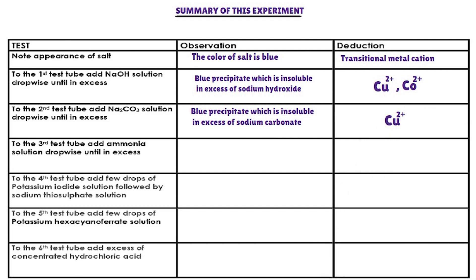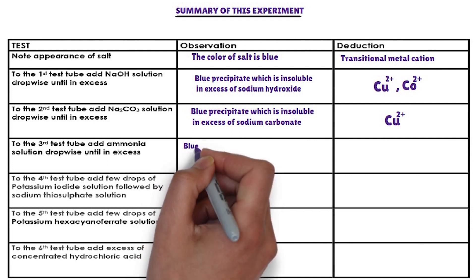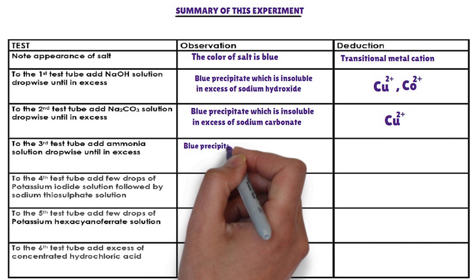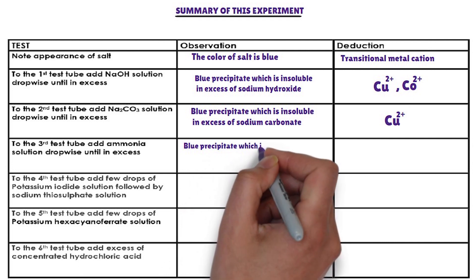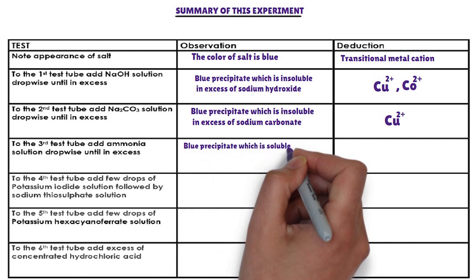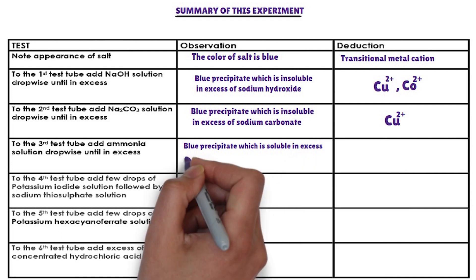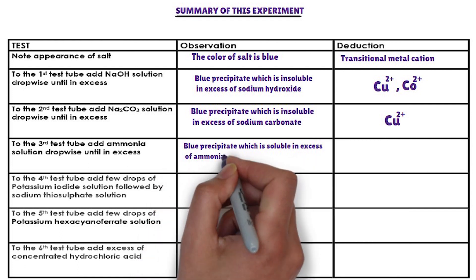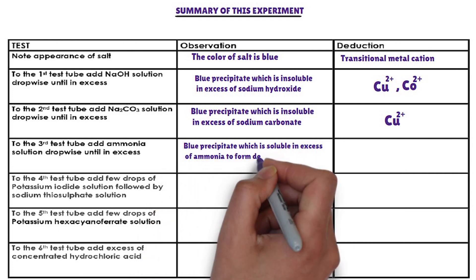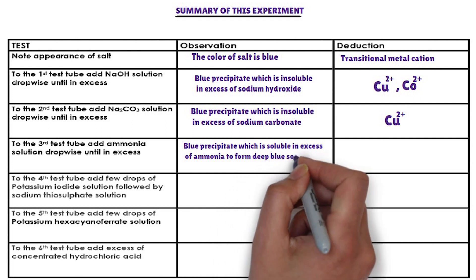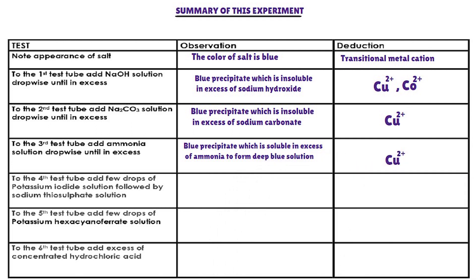Confirmatory tests. First confirmatory test: ammonia solution is added dropwise to the third test tube. The cation that forms a blue precipitate with ammonia solution, and whose precipitate is soluble in excess of ammonia to form a deep blue solution, is copper-2-ion. Copper-2-ion is confirmed. The cation present in the salt is copper-2-ion.